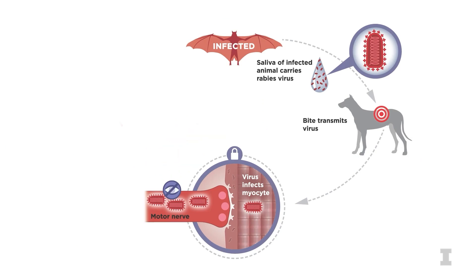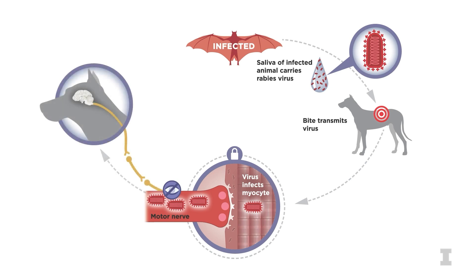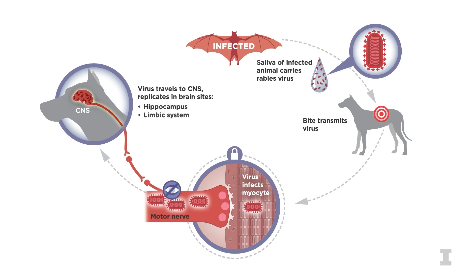Furthermore, rabies doesn't elicit a response by disrupting or damaging the cell, allowing itself the freedom to travel from neuron to neuron until it reaches the central nervous system at the spinal cord. From here, it travels to the brain and replicates. Common sites of infection in the brain include the hippocampus, limbic system, medulla, and cerebellum.